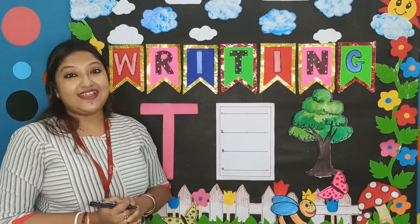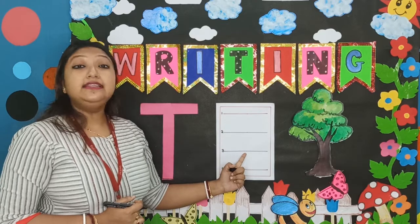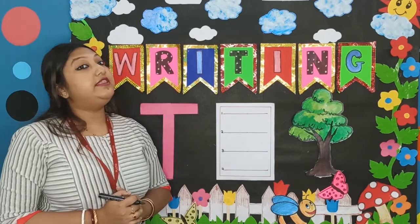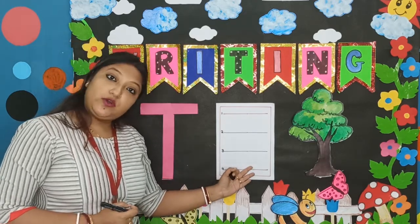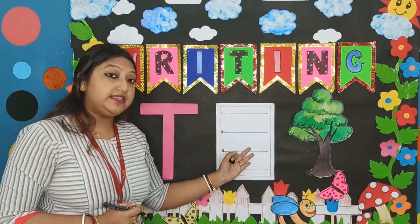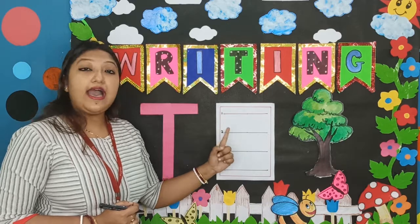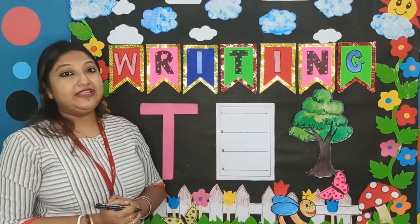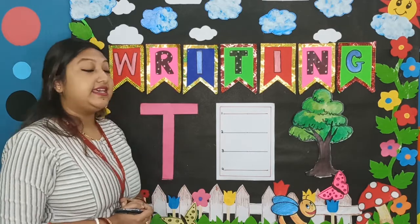We will always write within the first line and the third line. We will never write on the fourth line. We will always try to write within these first three lines: 1, 2, and 3. Now we will be learning how we can write the letter T.